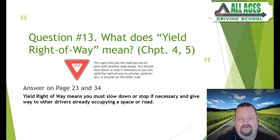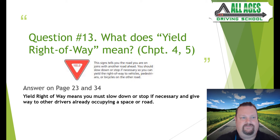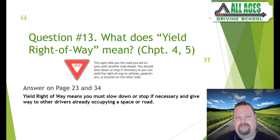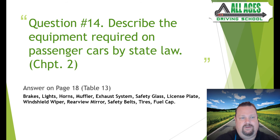Question number thirteen: what does yield right of way mean? From chapters four and five. The sign tells you the road you're on is joining another road ahead; slow down or stop if necessary to yield the right of way to vehicles, pedestrians, or bicycles on the other road. A simple way to understand it: yielding the right of way means allowing others to occupy a space. Anytime two vehicles make contact, one had the right to that space and one didn't — the one without the right should have yielded.